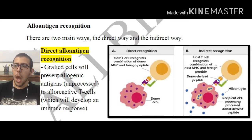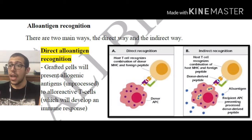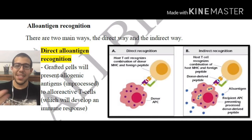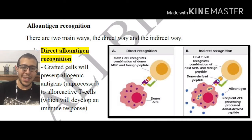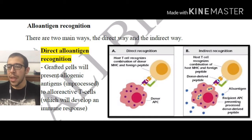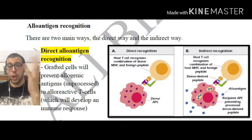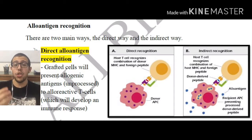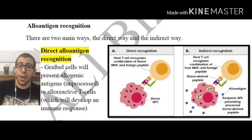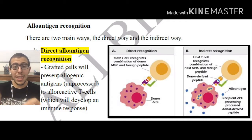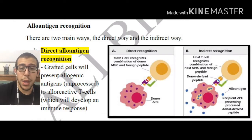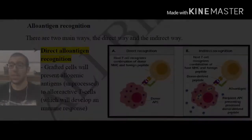Grafted cells will present allogenic antigens that are unprocessed to alloreactive T cells. This is just a fancy way to say that the alloantigens from the donor are going to be presenting to the T cells of the recipient, and it's worth noting that these alloantigens are not processed. This is where the immune system is going to be triggering a response.